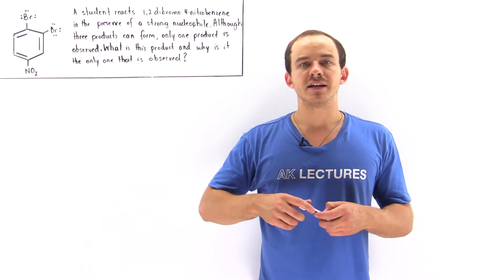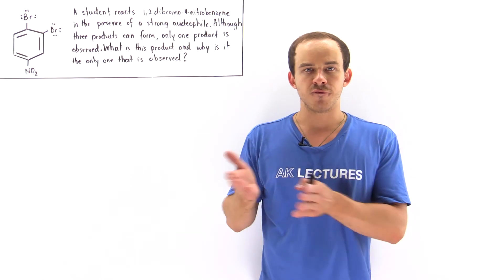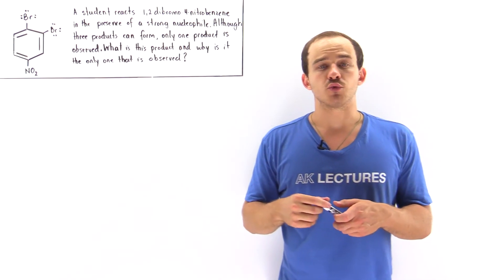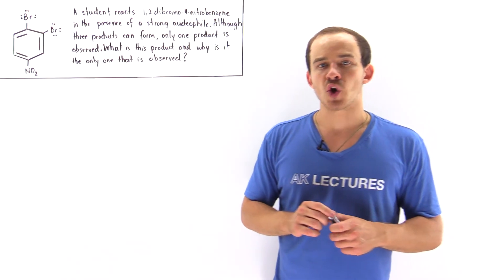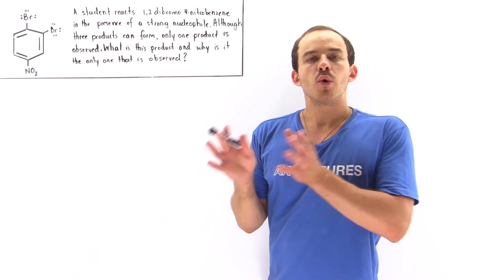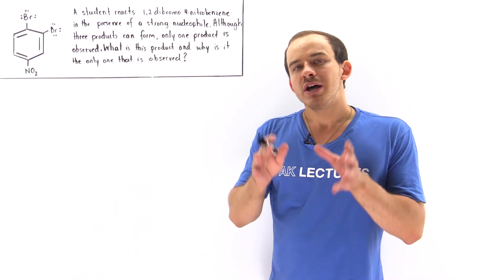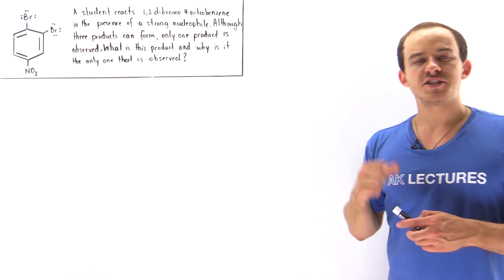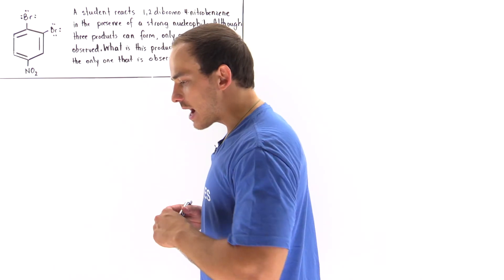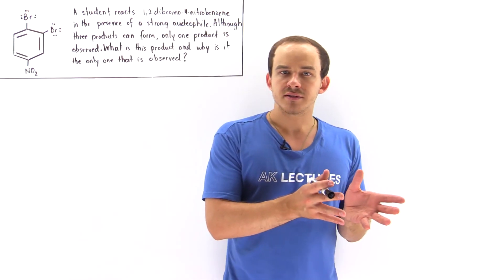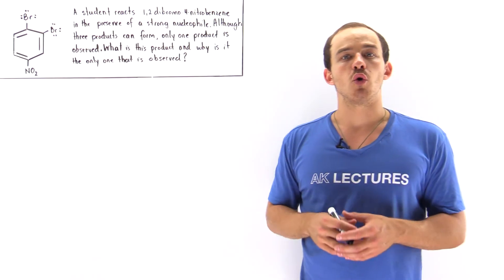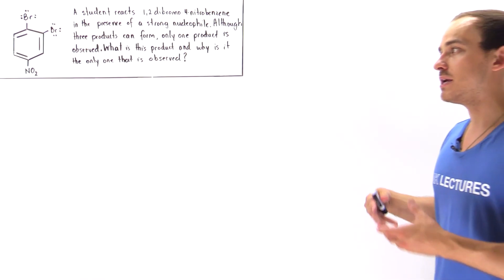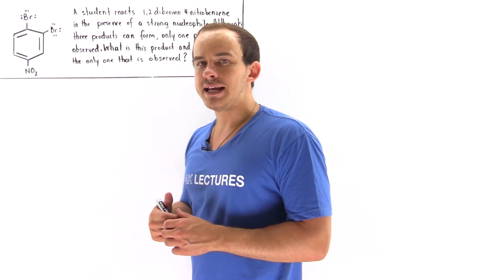In some cases, a benzene-containing molecule will react with a nucleophile to form some type of product. Let's take a look at the following example that deals with such a reaction. Let's suppose we take 1,2-dibromo-4-nitrobenzene and react it with a strong nucleophile. Although three potential products can be formed, let's say a student observes that only one of these products is actually formed.